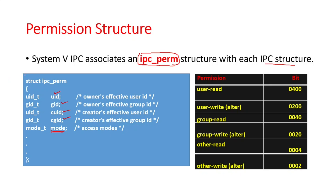The bit values for the mode field are: user read is 0400, user write is 0200, group read is 0040, group write is 0020, others read is 0004, and others write is 0002. This is the permission structure associated with each of the IPC structures.